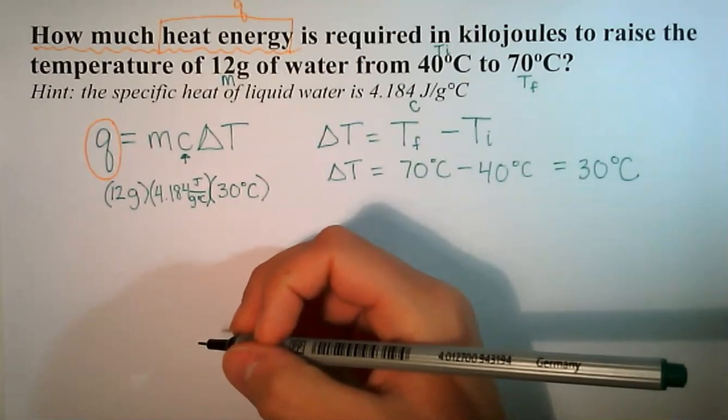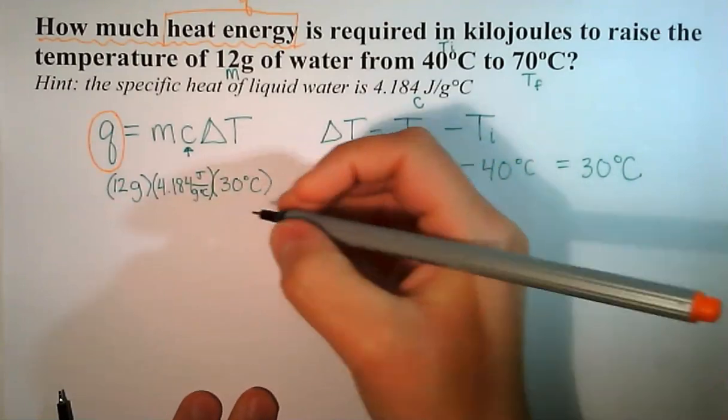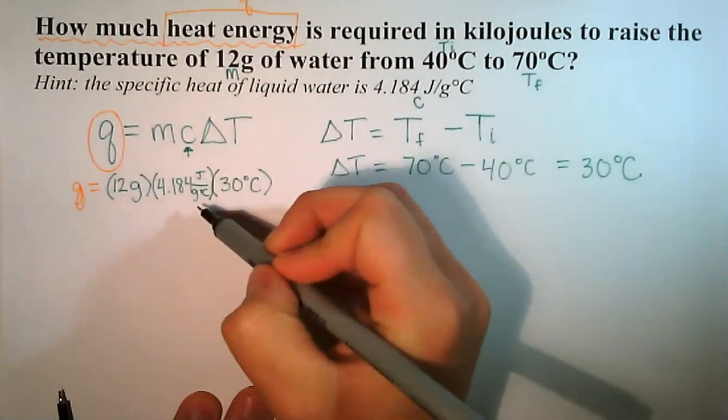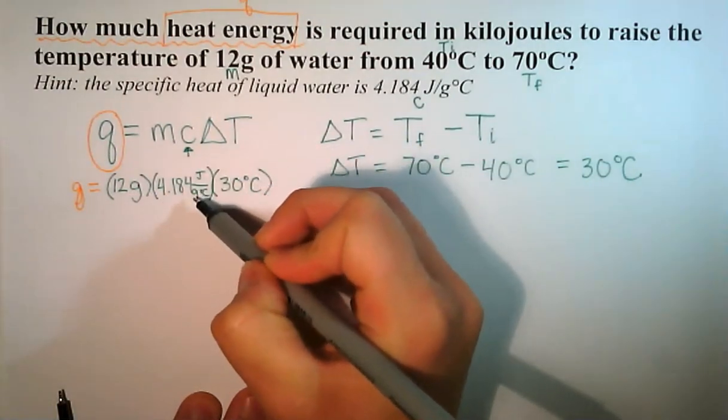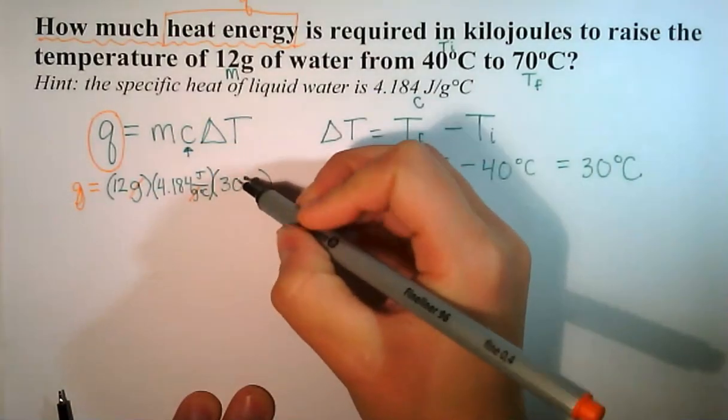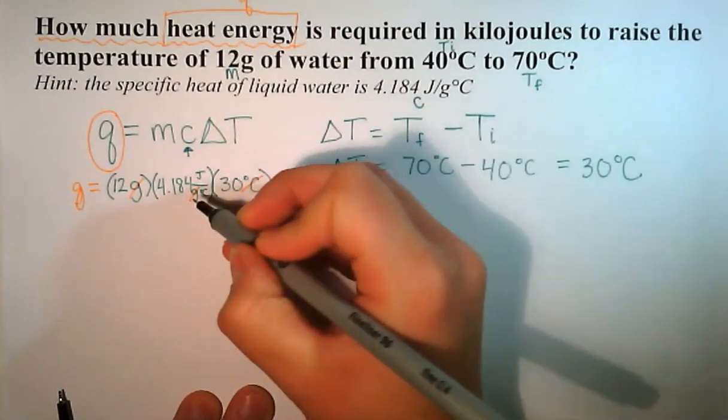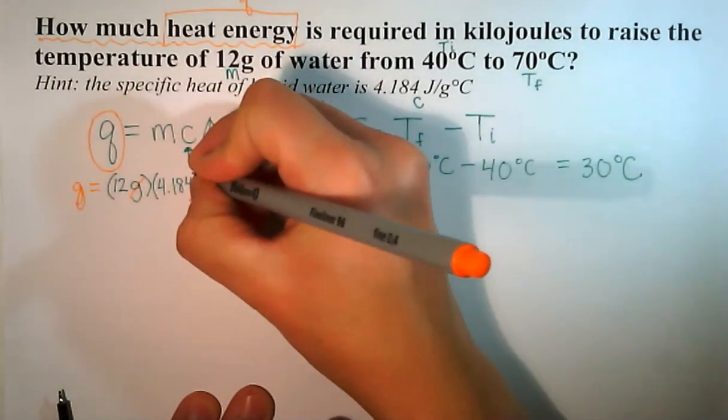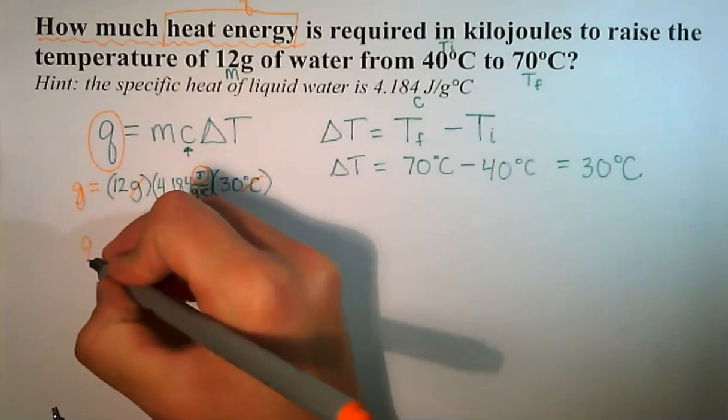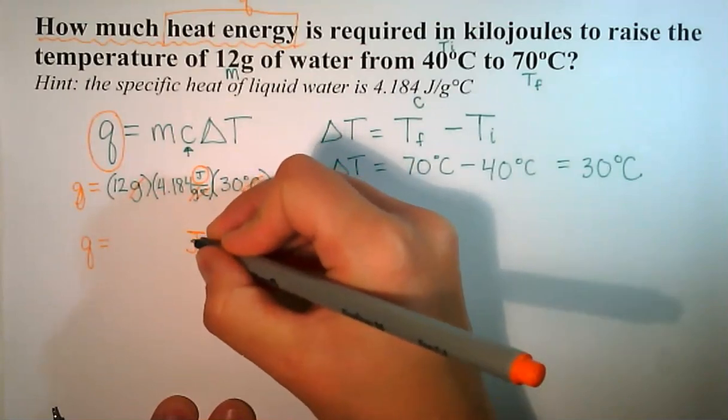Now we need to do some math, and we need to take a look at our units. I always like to do units first. We have grams here, and then we have grams in the denominator of our unit for specific heat, so those grams are going to cancel out. And we have degrees Celsius in the denominator, so that will cancel with the degrees Celsius in our temperature change. We're just going to be left with joules as our final unit, which does make sense because that is a unit of energy.